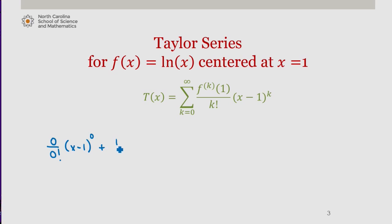1 over 1 factorial times x minus 1 to the first, minus 1 over 2 factorial times x minus 1 to the second,